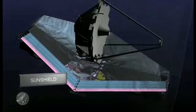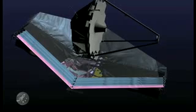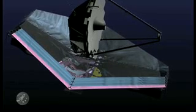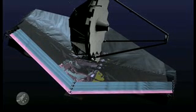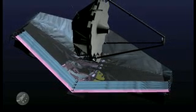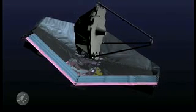Layers of reflective insulation stretched across an area the size of a tennis court form a sun shield that protects the telescope from the intense light and heat of the sun, earth, and moon. The telescope must be kept at 40 degrees above absolute zero, or its own infrared glow will overwhelm the faint sources of light that astronomers are trying to observe.